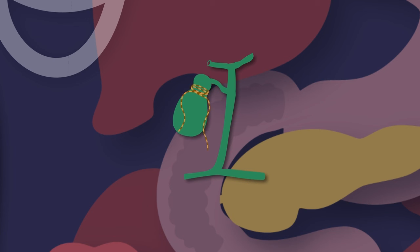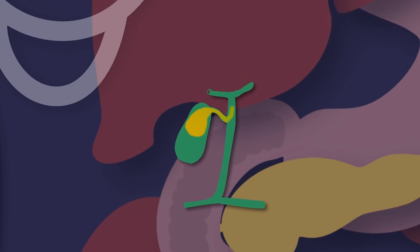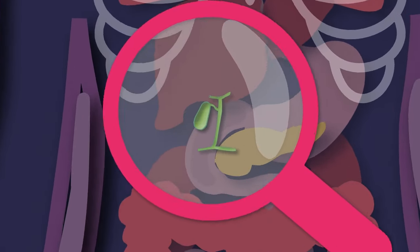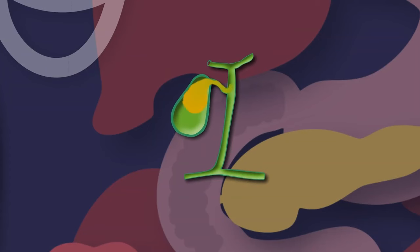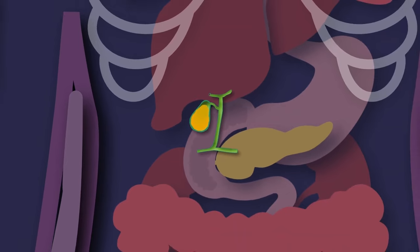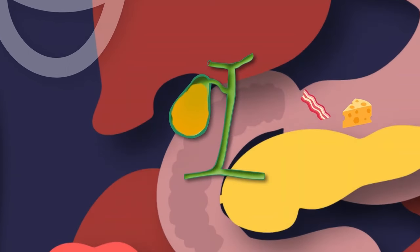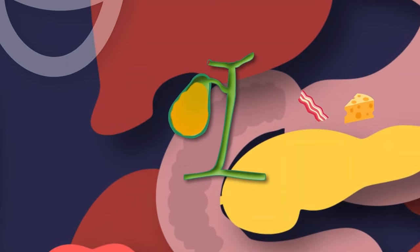I am a sac-shaped organ, you see. I am a gallbladder. Your liver stores its bile in me. I act as a reservoir by storing the bile that your liver does pour. This bile is made and used to break down fats from all the eaten foods.